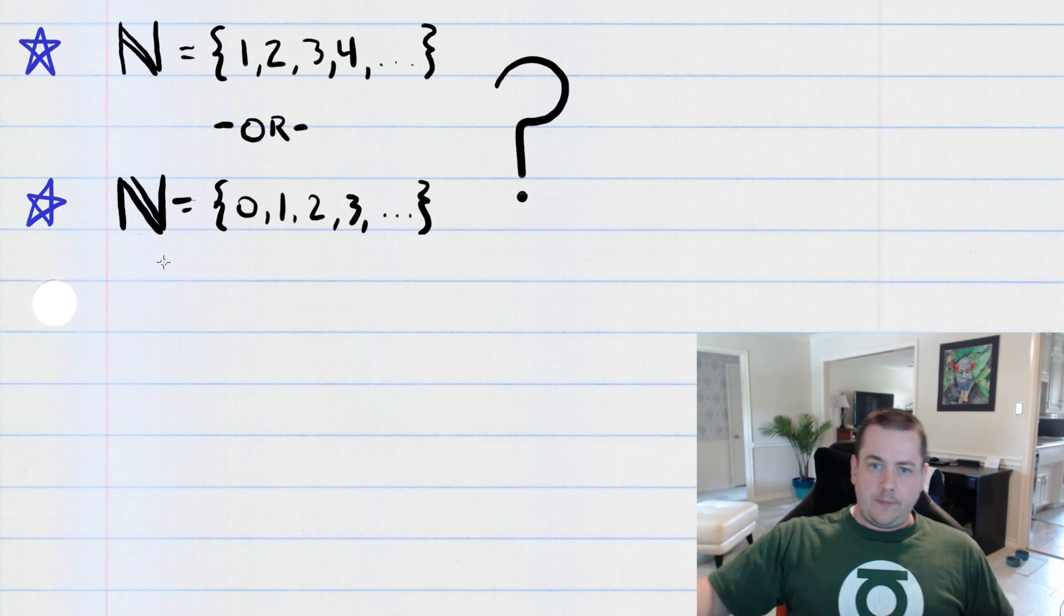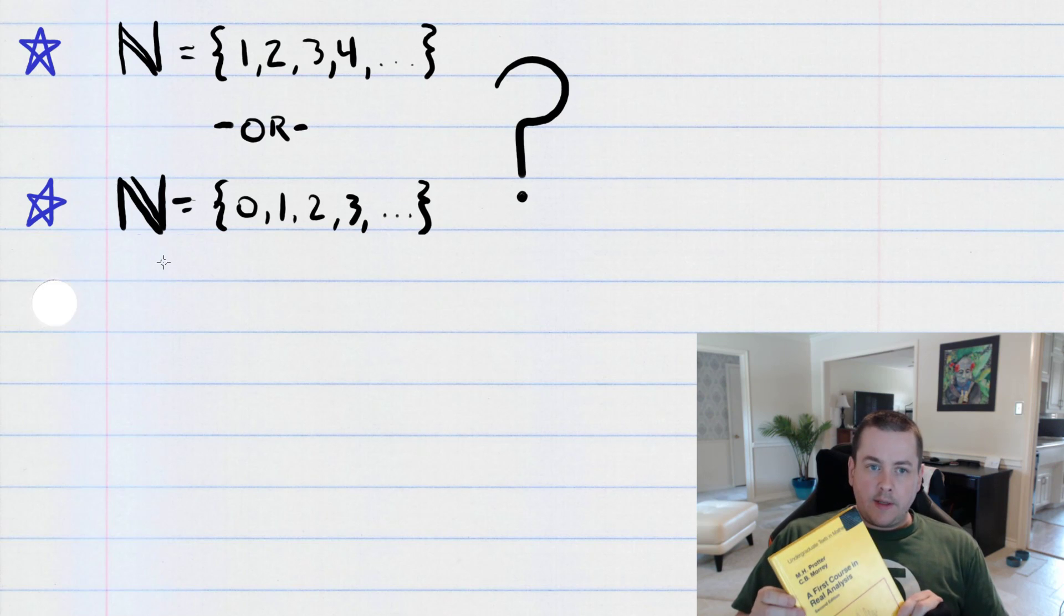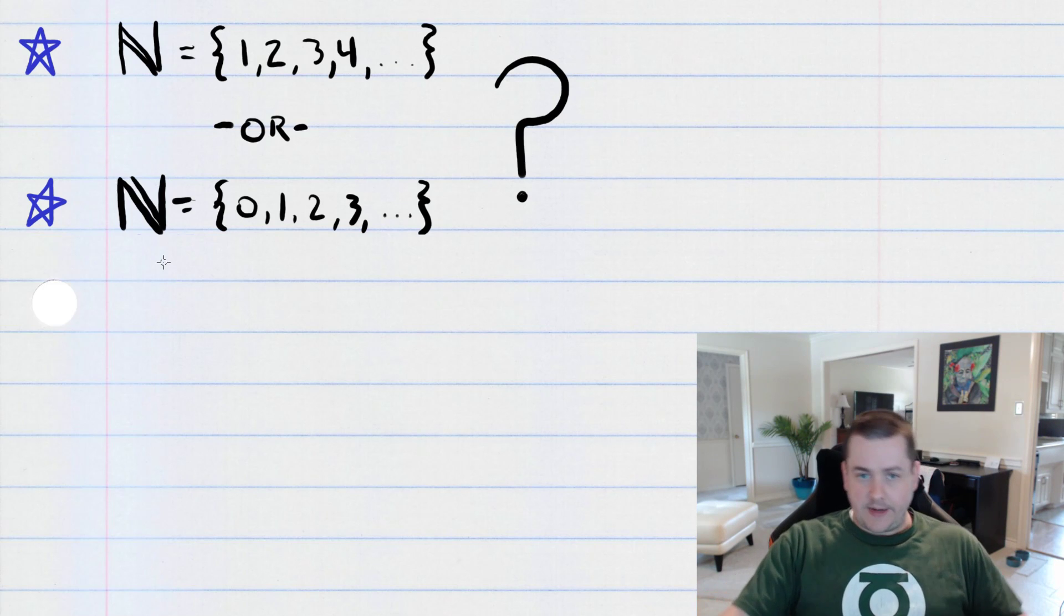Now, this book, this is the book that I used in my undergraduate real analysis class, uses the first definition for the set of natural numbers. It says that the set of natural numbers is the set containing one, two, three, four, five, and so on.